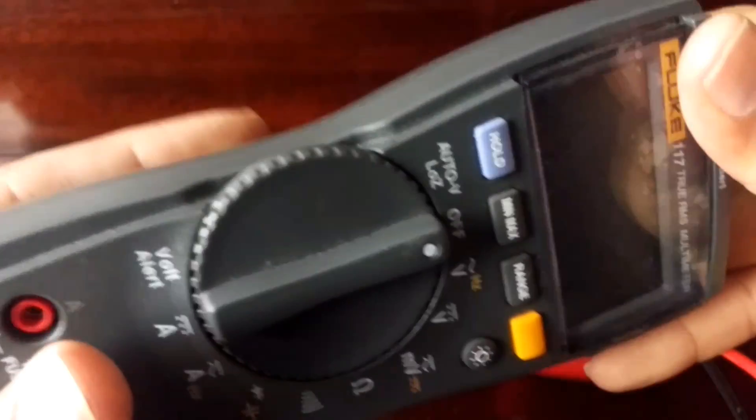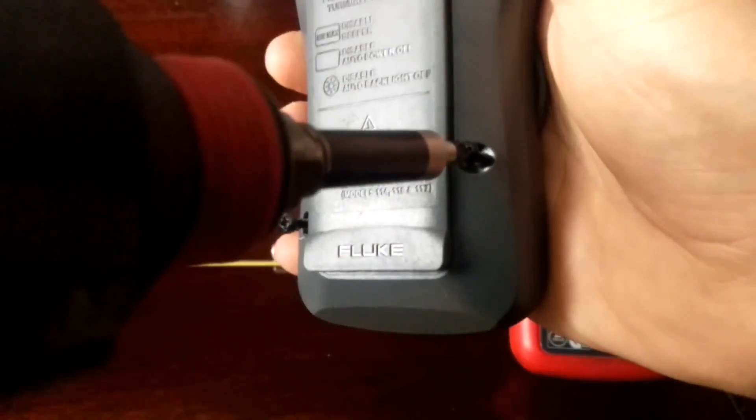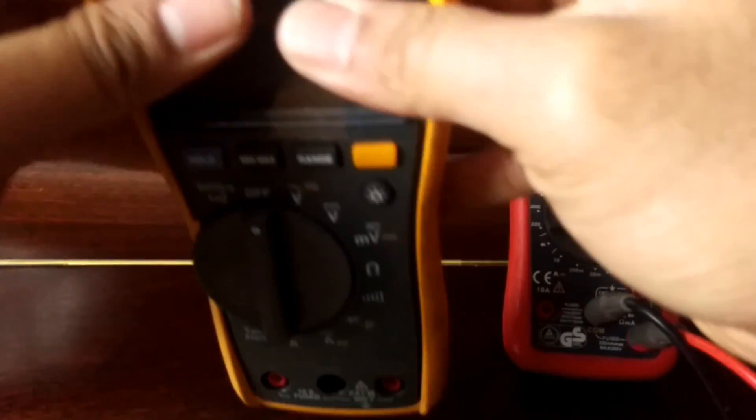And then to replace the fuse, well, it's just very simple. Just clicking it back into place there. Snapping everything back together on the meter. Secure the two screws again. And then I'll just need to replace the cover. Pop that back on.